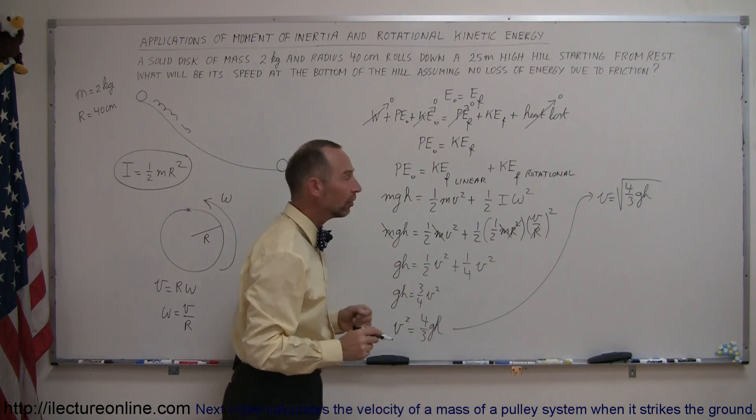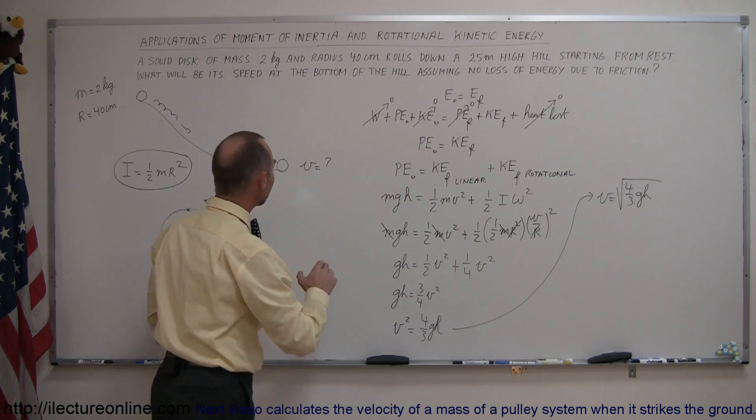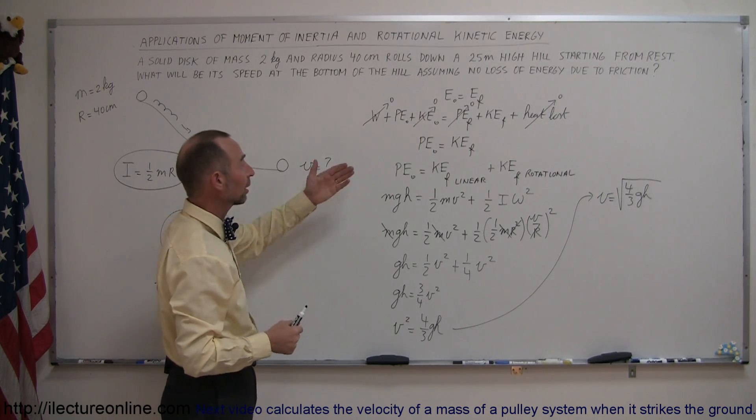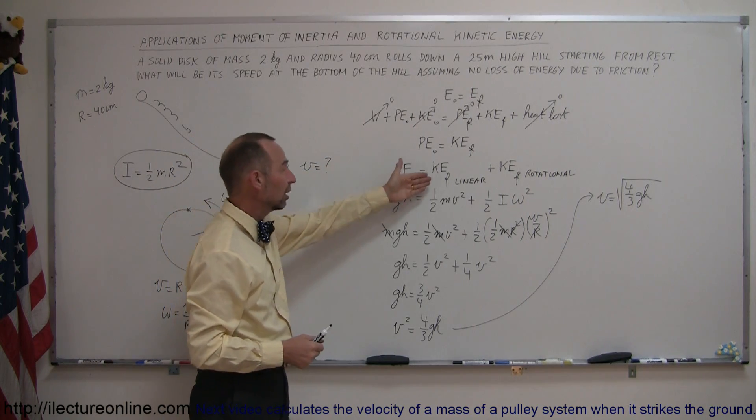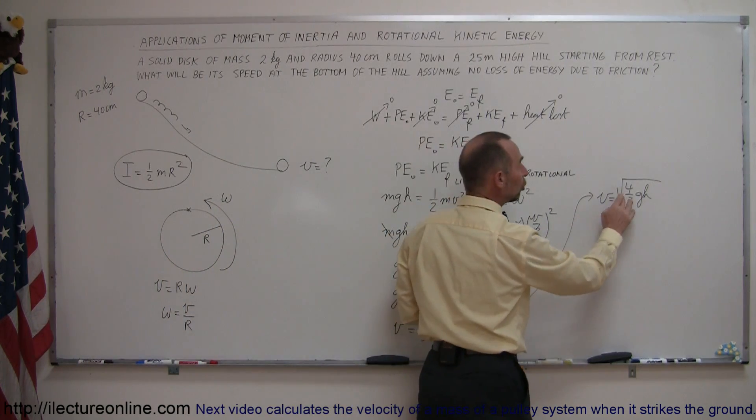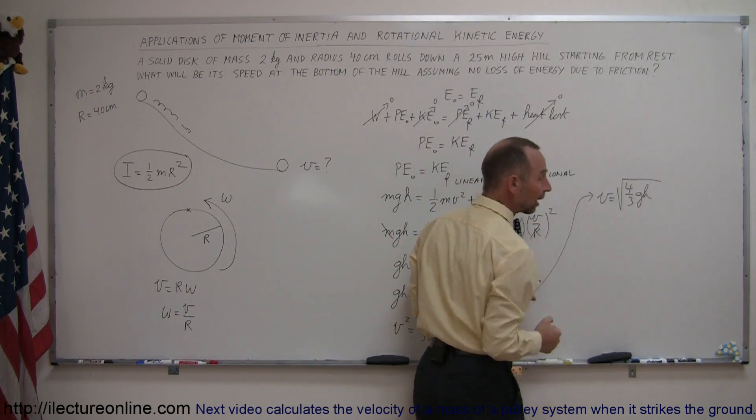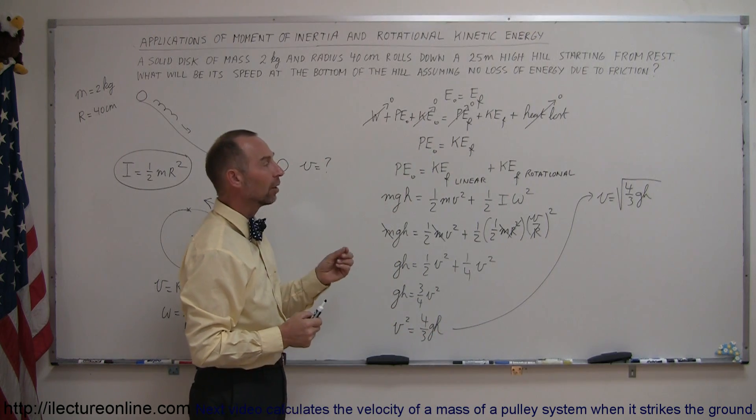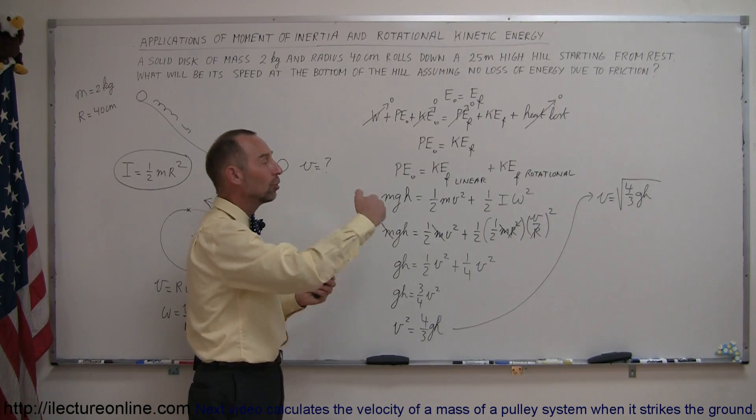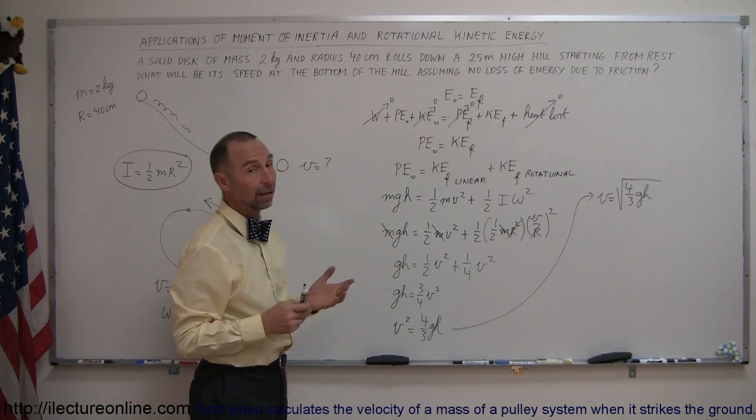Now that's kind of an interesting result. When you think of it, if we did not take into account the rotational kinetic energy and only assumed that the potential energy translated into just the linear kinetic energy alone, then the velocity would have been equal to the square root of two gh. So now it's a little bit smaller than two gh. It's the square root of four-thirds gh, because part of the energy is also put into the rotation of the wheel.